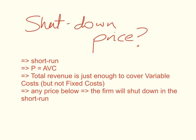The concept of the shutdown price applies mainly in the short run. The shutdown price is the level of output where price equals average variable cost. It is the level of output where total revenue is just enough to cover the variable costs but does not cover fixed costs. Any price below the shutdown price, the firm will decide to shut down in the short run, because if the price is below the average variable cost, it's actually cheaper to shut down, as you'll be paying just your fixed costs, so you'll be minimising your losses.